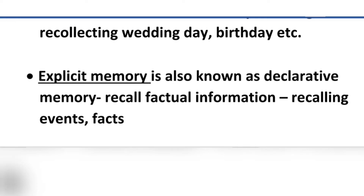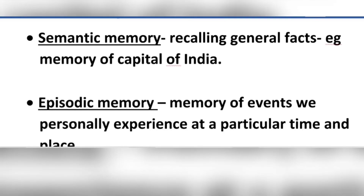Explicit or declarative memory is again divided into episodic memory and semantic memory. Semantic memory involves recalling general facts. For example, the memory of the capital of India — New Delhi — is semantic memory. We recall general facts like the sweet taste of an apple; these are facts stored in our minds as semantic memory.